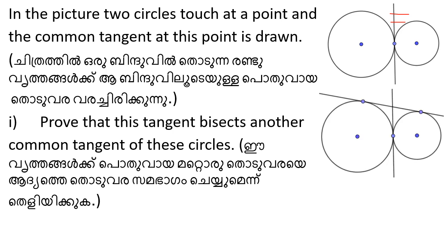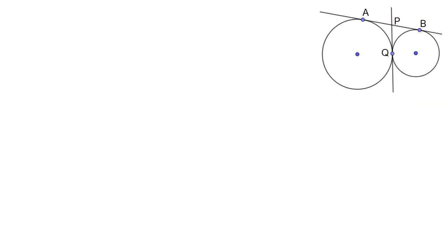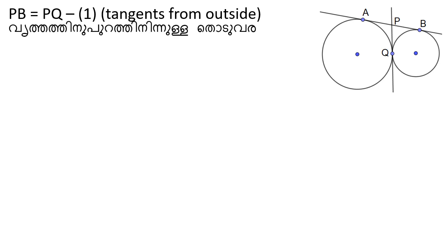In the picture, two circles touch at a point. Let's say pb equals pq, because from point P there are two tangents: PQ and PB. Therefore pq equals pb. That is question number 1.